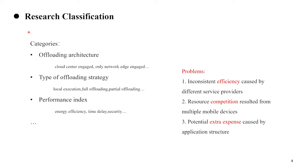In this part, we introduce the research categories of computation offloading. We can broadly classify these studies into the following categories. The first category is offloading architecture, which is divided into offloading tasks to the cloud center, offloading tasks to the edge network, and both of them. The second category is from the perspective of the type of offloading stage, which can be divided into local execution, full offloading, and partial offloading. Another category is performance index, which can be classified into energy efficiency, application delay, and security of mobile devices, and so on.